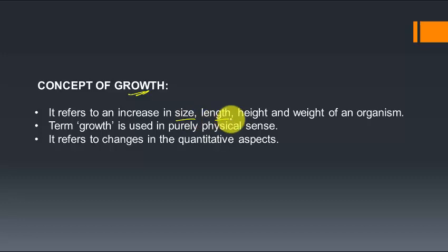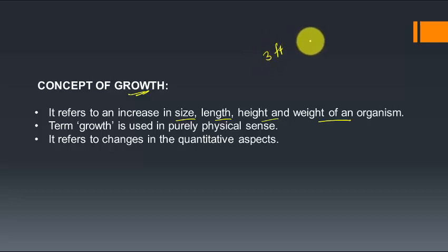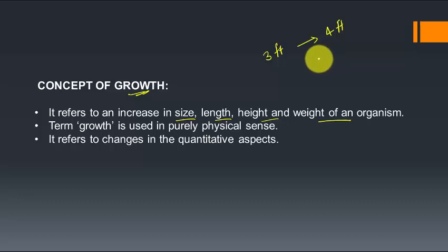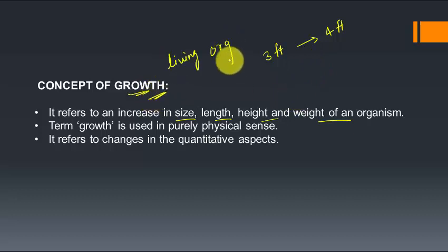Growth refers to increase in size, length, height, and weight of an organism. For example, if a person has a height of three feet and after two or three years his height has increased to four feet, we can see the physical increase. Growth is always shown by a living organism — it is a function of a living organism. A non-living thing will never show increase in length, weight, or height on its own.